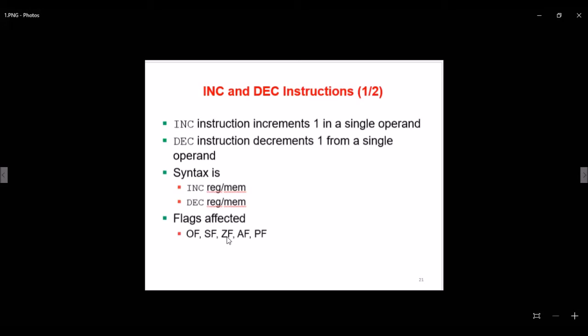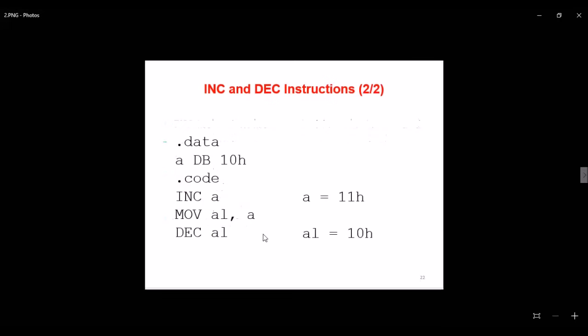If you have zero then you have zero flag. Parity flag - this is the number of one bits. If even, the flag is set, and if odd, it is zero. If you don't have time for flags, you can see the next video where I will explain the flags.